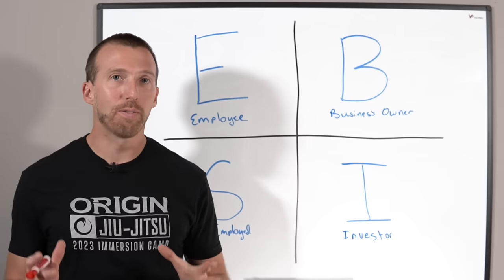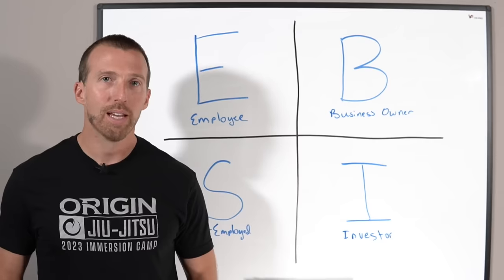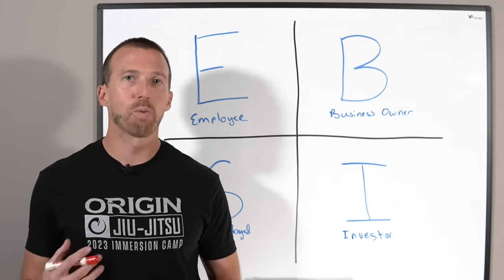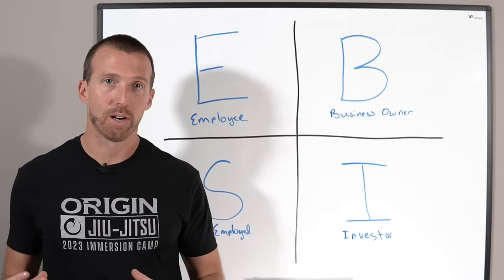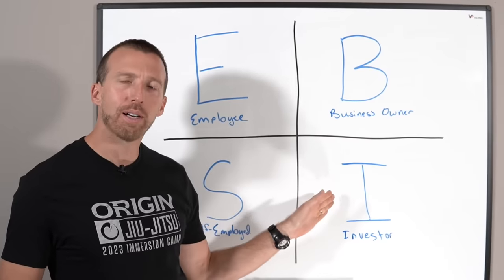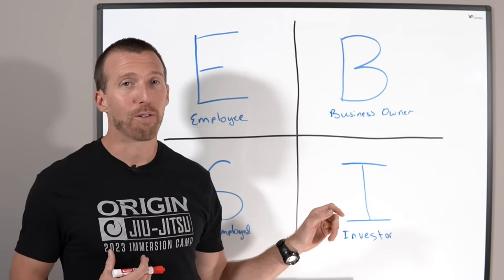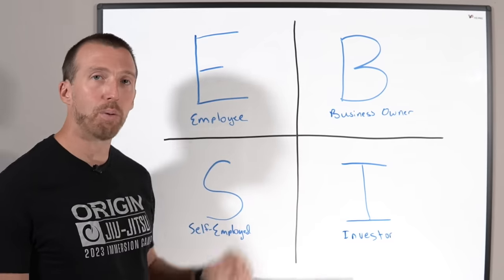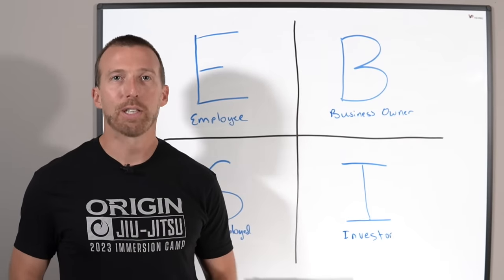The chances, though, of most of us watching this video being already in this I quadrant, truly being in that I quadrant, is very slim. We can also fool ourselves over time as we're building our business, as we're running a real estate career, thinking in reality that we're a business owner investor. Well, I bet you 99 out of 100 people watching this video, and myself included for a very long time, we're still on the left side of this quadrant, trapped in the employee self-employed side.